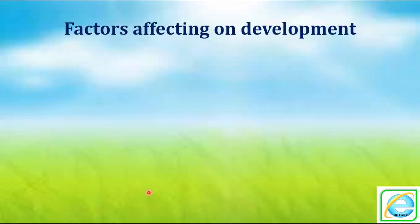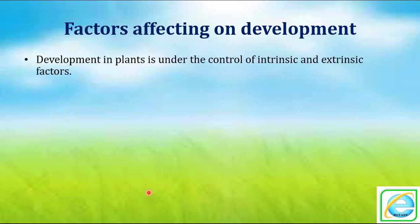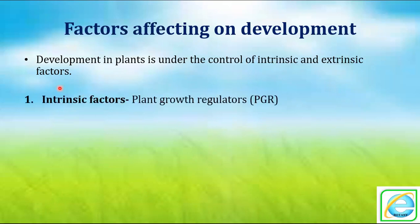Now the factors affecting development. These factors are very essential — they control all activities. Development of the plant is controlled under two kinds of factors: intrinsic factors and extrinsic factors. Intrinsic factors are completely related to inner side factors — some plant growth regulators, called PGR, phytohormones, or plant hormones. These are some chemicals found in plants or synthesized within plants.